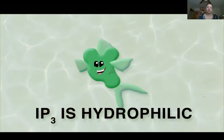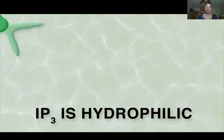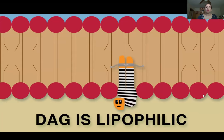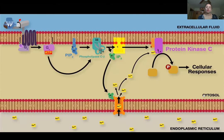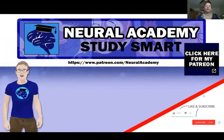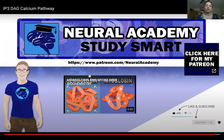IP3 is hydrophilic and diffuses into the cell, while DAG is lipophilic and remains in the cell membrane. IP3 binds to calcium channels on the endoplasmic reticulum and allows release of calcium from the ER lumen. DAG, with the help of calcium released from the ER, activates calcium-dependent protein kinase C. Once activated, protein kinase C adds phosphates to target proteins and causes cellular responses.